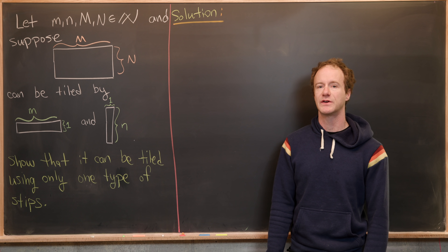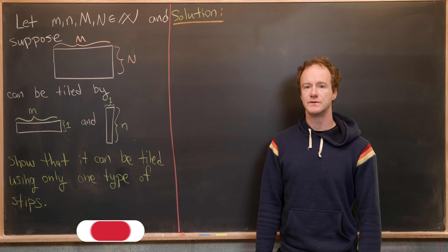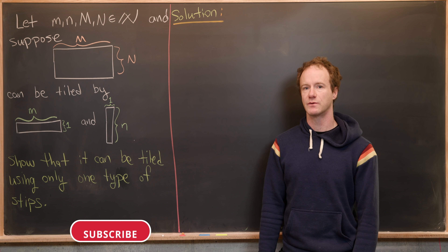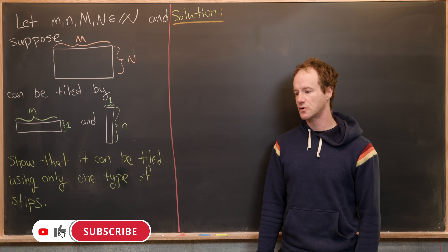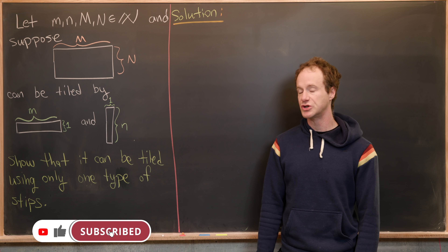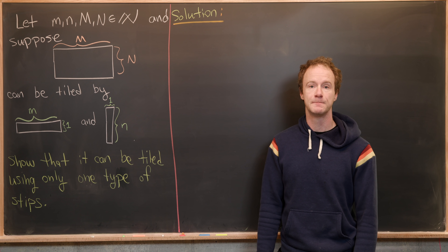Here we're going to look at a nice combinatorics problem, which we'll solve using complex arithmetic. In particular, we'll use the notion of the roots of unity.